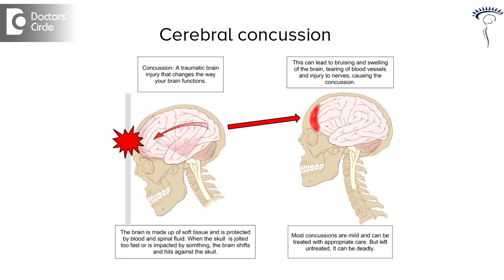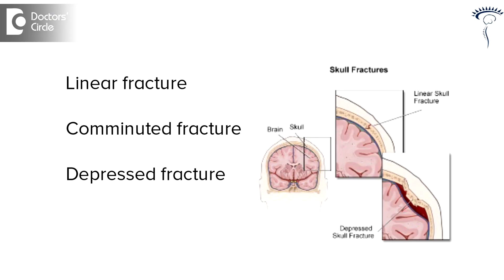Now, coming to cerebral concussion — in cerebral concussion, there would be no structural damage, but there is a loss of consciousness which is only transient. In case of skull fracture, it may be a linear fracture, it may be a comminuted fracture, or it may be a depressed fracture. A depressed fracture, depending upon the severity, needs to be addressed.